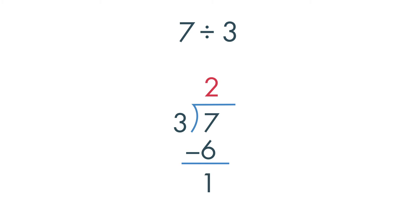The remainder is not a whole number. It is a part. Since we divided by 3, the remainder is 1 out of 3 or 1 third.